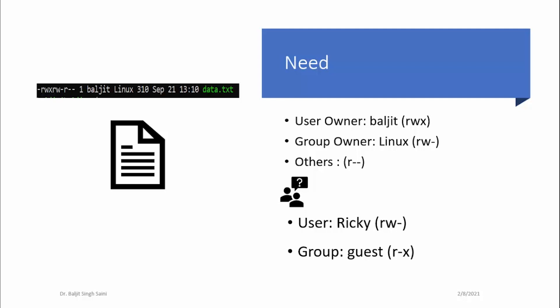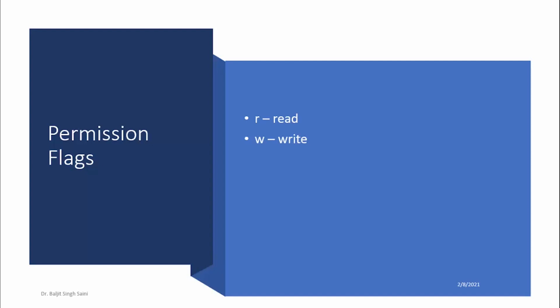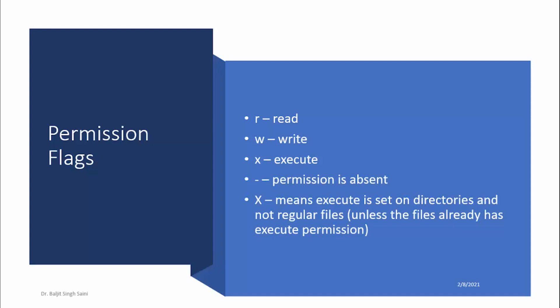This is where the access control list comes into play, and we use the command setfacl to give special permissions to special users or groups. The permission flags that we can use with ACL are read, write, execute, minus for no permission, and a special flag capital X. Capital X gives selective execute permission to directory content — subdirectories get execute permission, but regular files within a directory do not get execute permission unless they already have it. If you use small x, execute permission is given to both directories and files, which is not the right way since regular files should not have execute permission.